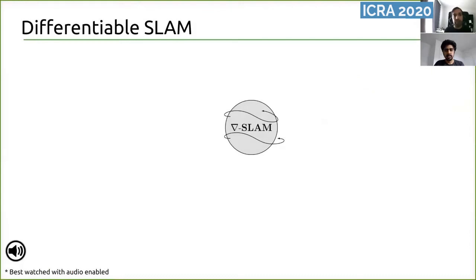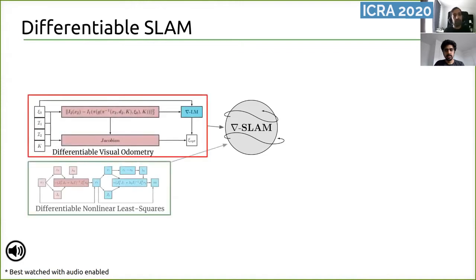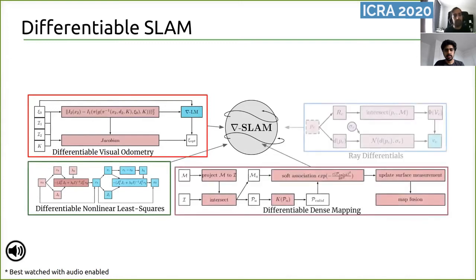Grad SLAM is a framework that comprises several fully differentiable SLAM components. In particular, it contains a differentiable visual-odometry pipeline, a new differentiable nonlinear least-squares solver, and differentiable mapping and raycasting modules. We now go into detail on each of these modules.